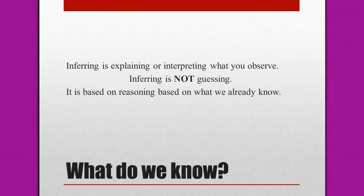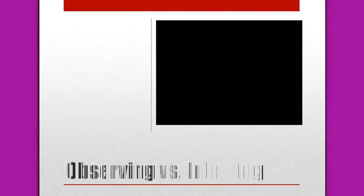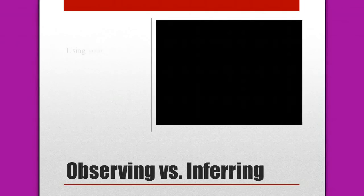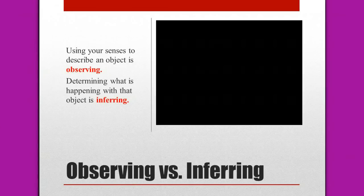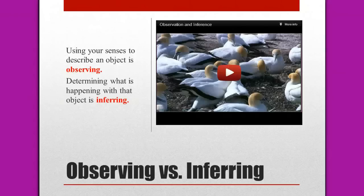What do we know? Let's first talk about the difference between observing and inferring. As you know, you use your senses in order to describe an object, and that is observing. Inferring would involve determining what it is exactly that your senses happen to see or happen to experience.